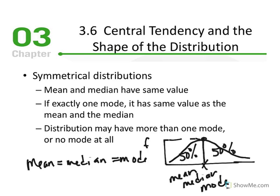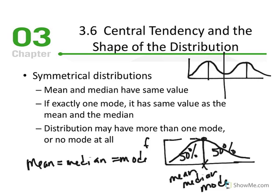We could have symmetrical distributions that are bimodal, where we have two modes but the distribution is still symmetrical — if we split it in half, we have equality on both sides. The idea that mean, median, and mode are all equal to one another applies only to a distribution that has exactly one mode.